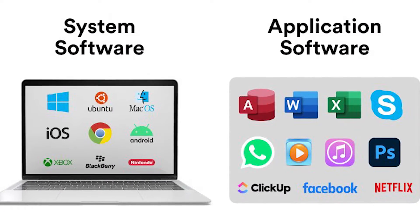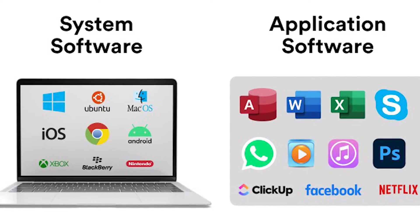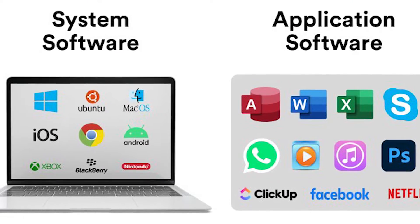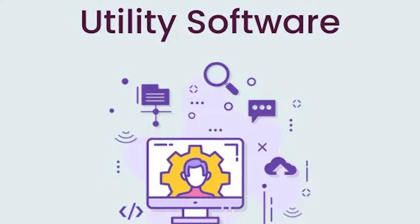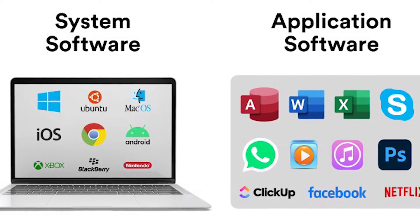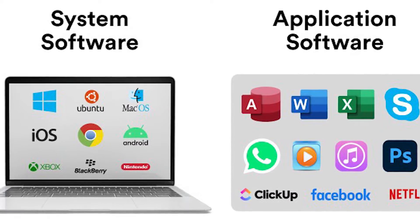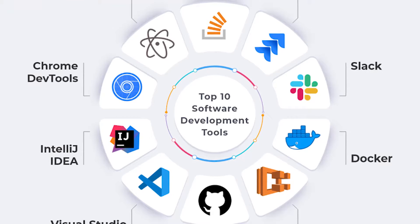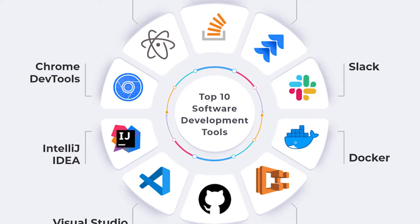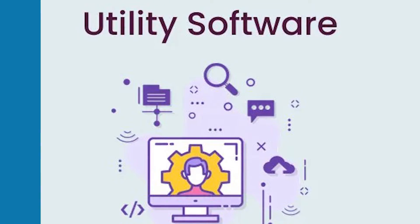There are different types of software. The two main categories are system software and application software, but there are others like development tools and utility software as well. The types of software we'll be covering in this course are: one, system software; two, application software; three, development tools; and four, utility software.